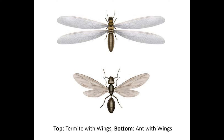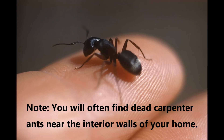If you compare the photos, you can clearly see that carpenter ants look much different than termites. You should also note that carpenter ants are really large and they range in size from a quarter of an inch to about three quarters of an inch, which makes them one of the biggest, if not the biggest ant in the United States. So if you can catch one of these things, you can easily tell if you're dealing with a termite or a carpenter ant.